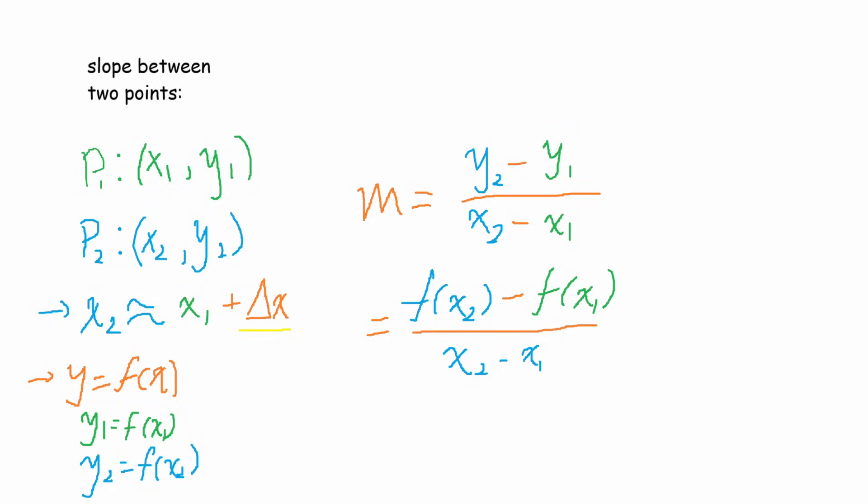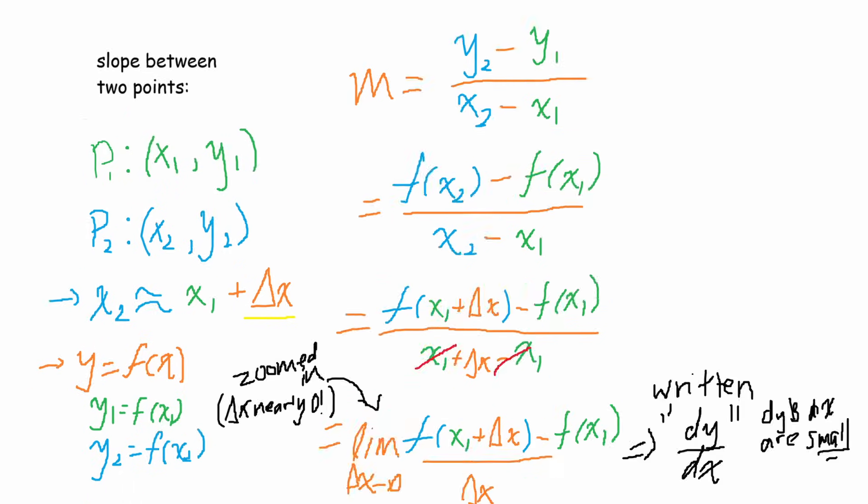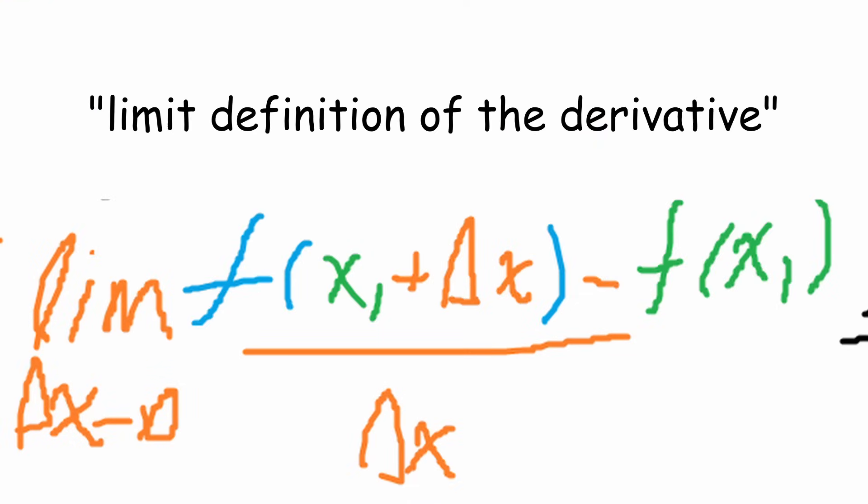Remember that f of x is another way of saying y. So we'll plug in f of x2 and f of x1, which is really just y at each of those x values. We plug in some more and voila. This is how we're going to find all our derivatives as functions.